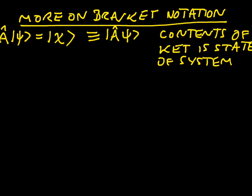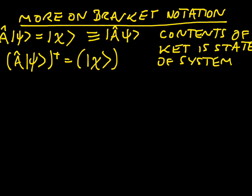Now, what does this mean? Let's think about Hermitian conjugates. We know that when we take the Hermitian conjugate, we write this as A-hat on psi with a dagger, which is equal to ket chi with a dagger outside. And when we take the Hermitian conjugate of a product — in other words, A acting on psi — we have to reverse the order and apply the Hermitian conjugate. So we find that bra-psi A-hat-dagger is equal to bra-chi.